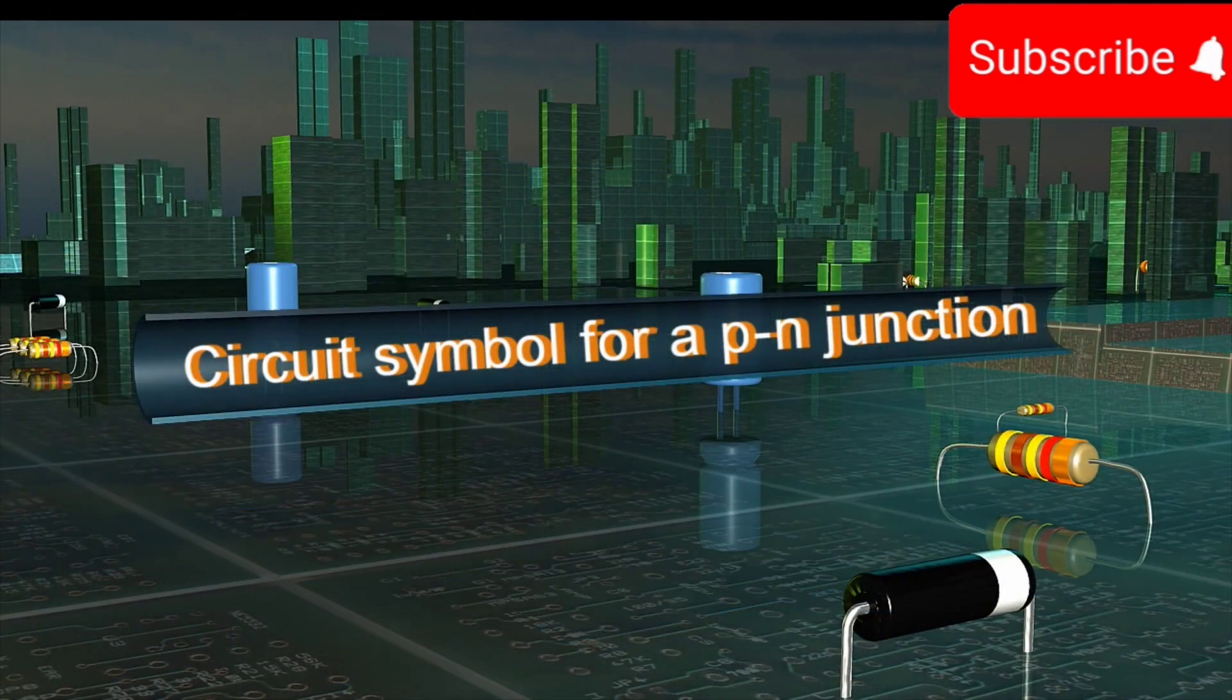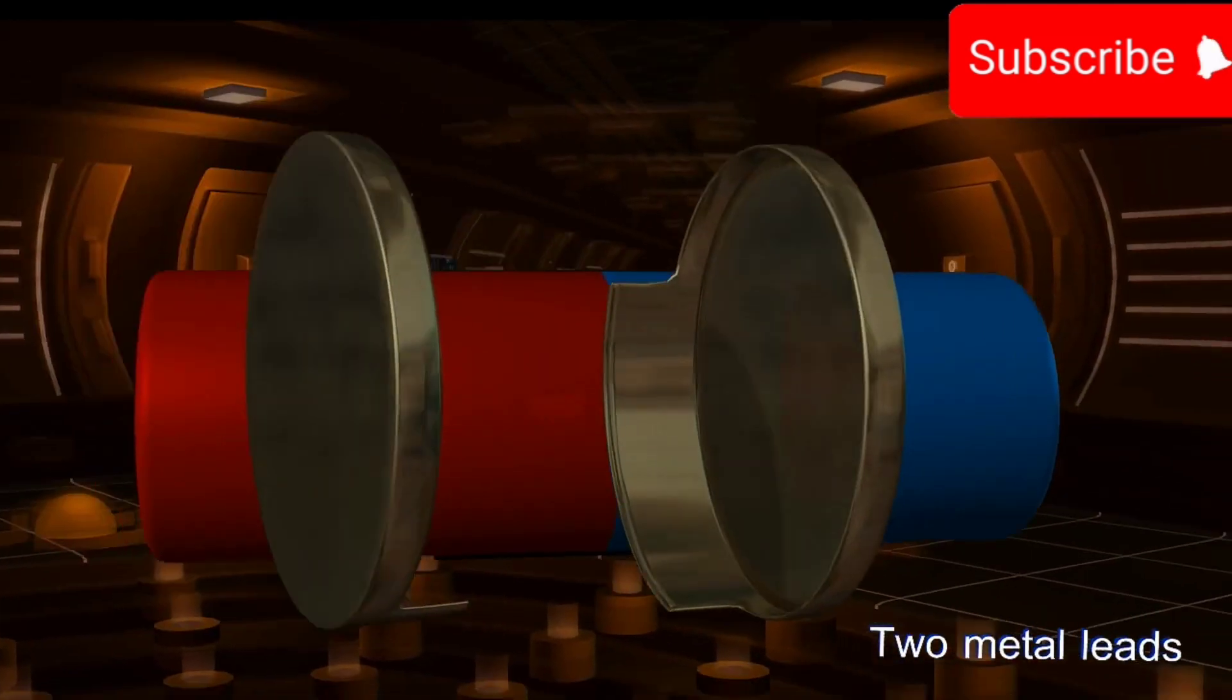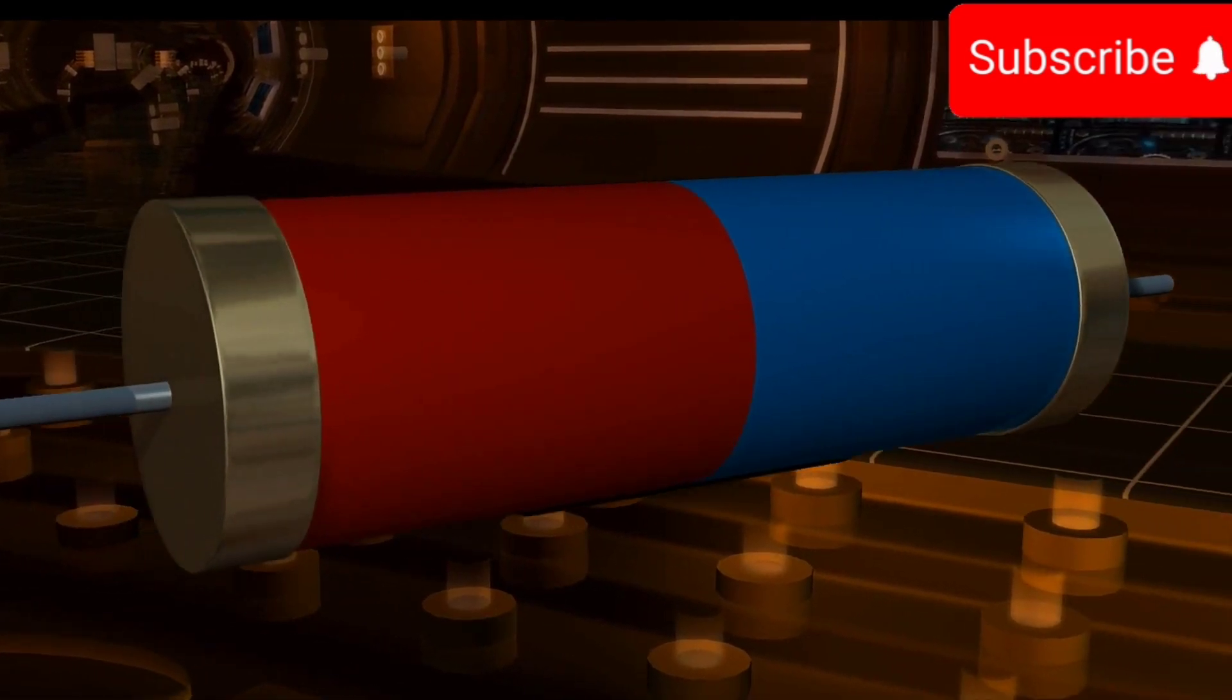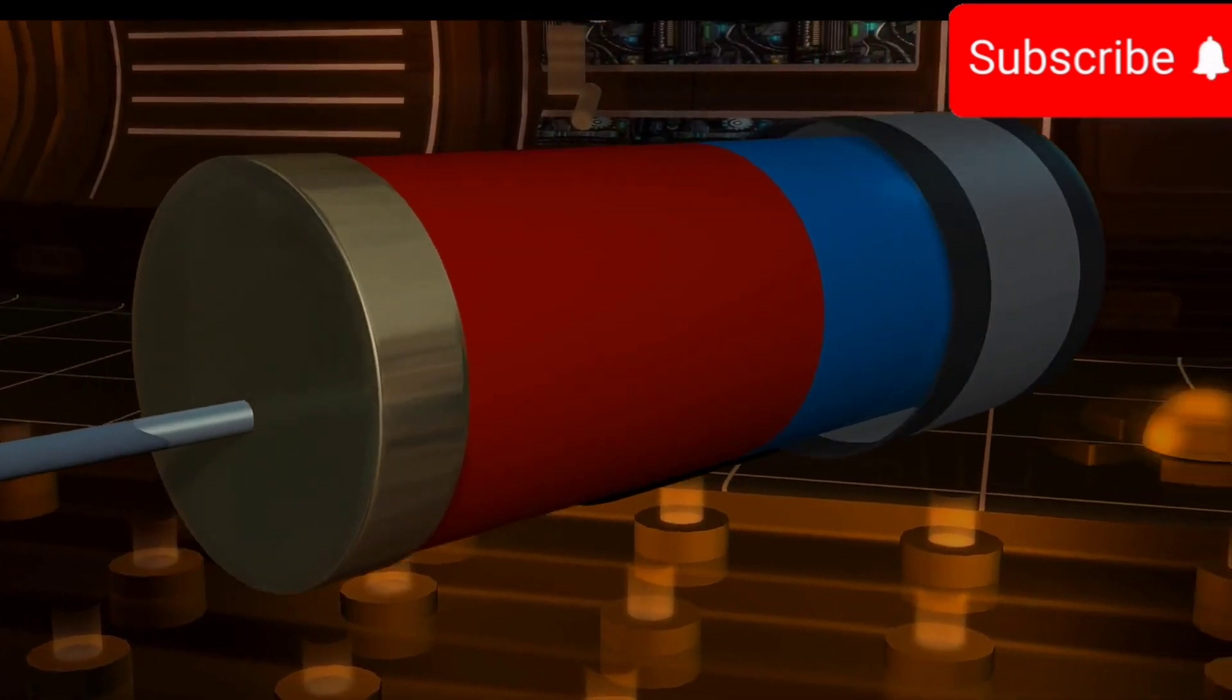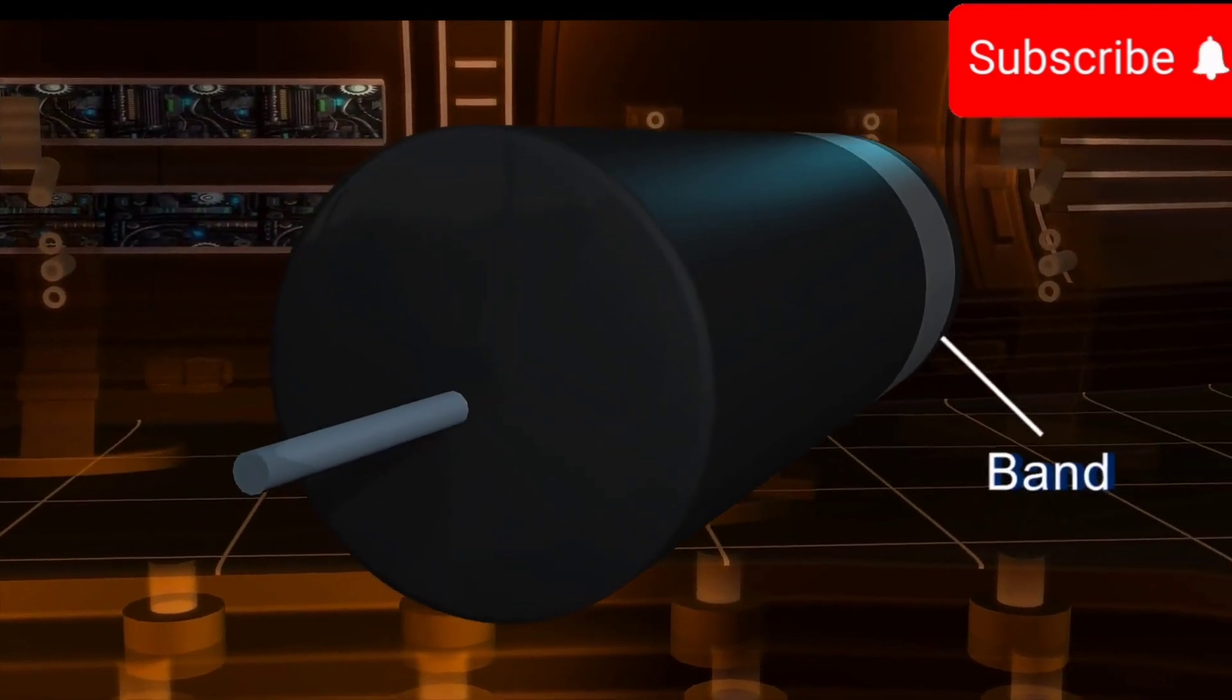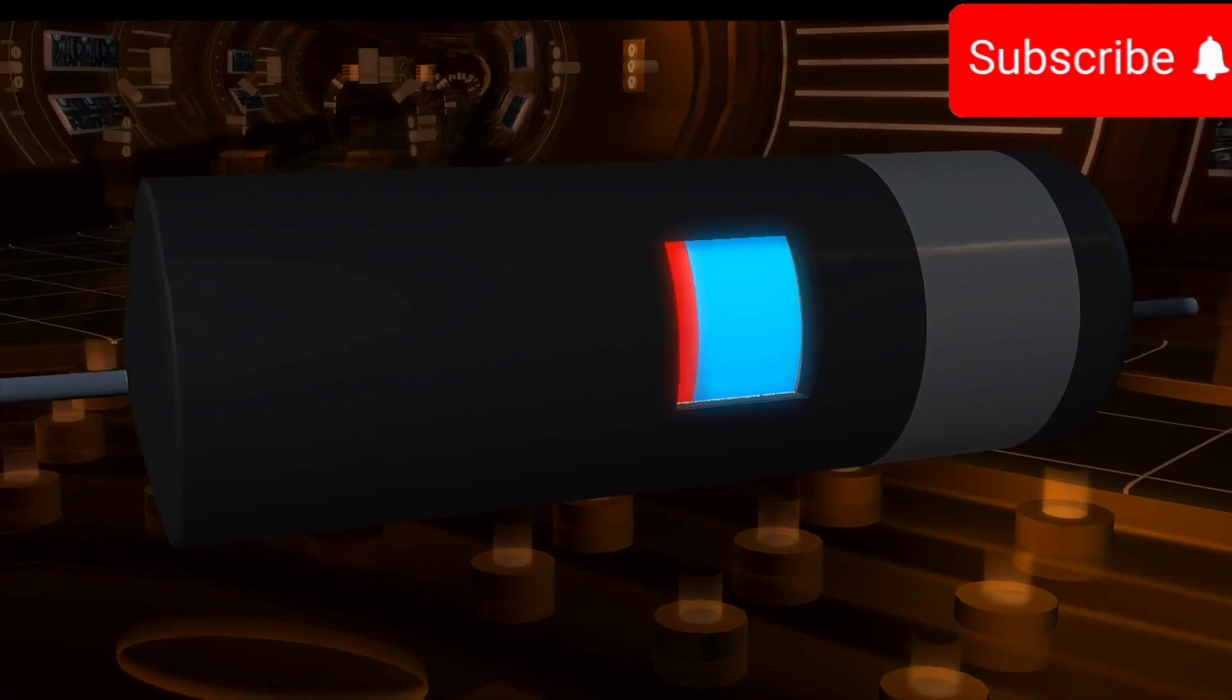Circuit Symbol for a P-N Junction: Two metal leads are attached at the end of each region. The wafer of P-N junction formed is enclosed in a casing with two electrode connections. The N side of the diode is indicated with a band. This two-electrode device is called a semiconductor diode.